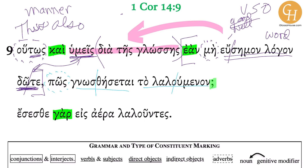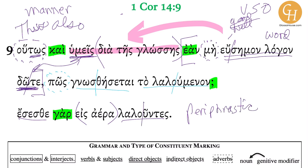And if you don't speak in a clear word — for the last part of verse nine, gar meaning 'for' — you will be speaking. The ese and the lalon work together to form what's called a paraphrastic participle construction: 'you will be speaking.' Again, this is from laleo, same verb, but it's active here, not middle-passive. You will be speaking into the air.